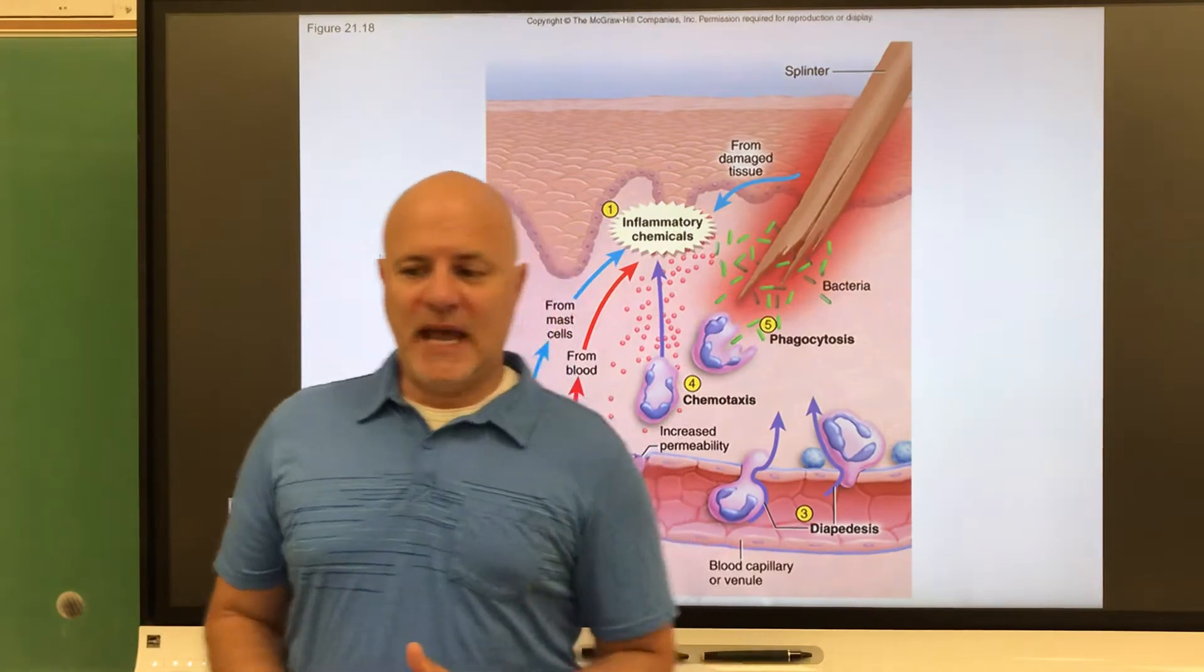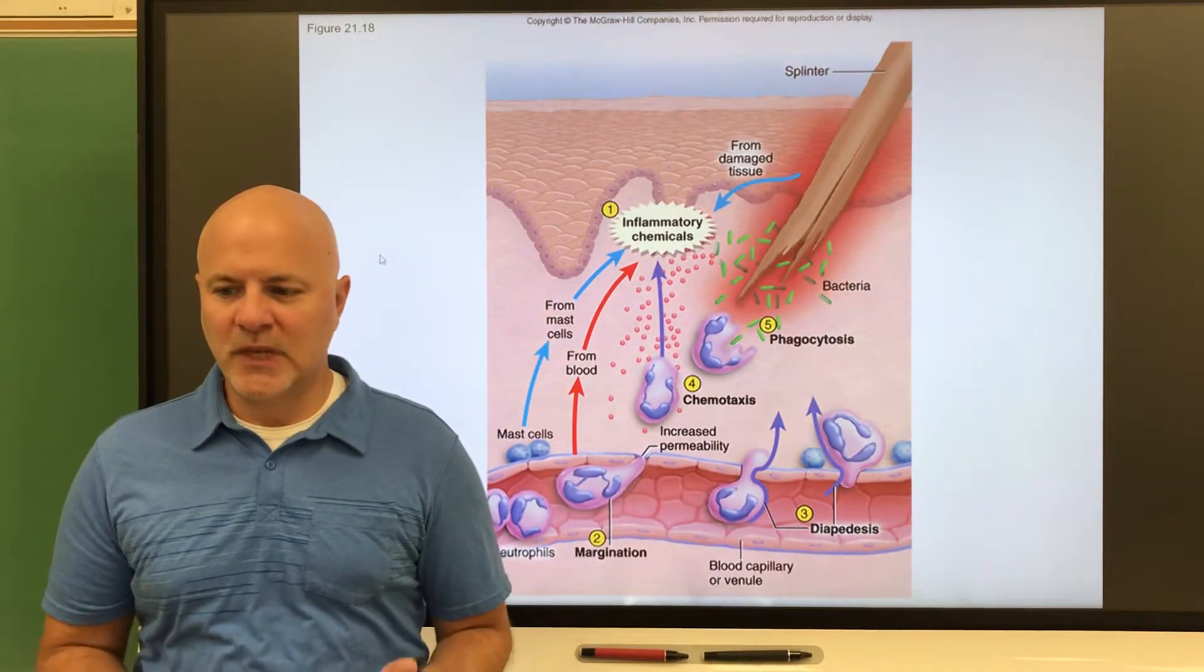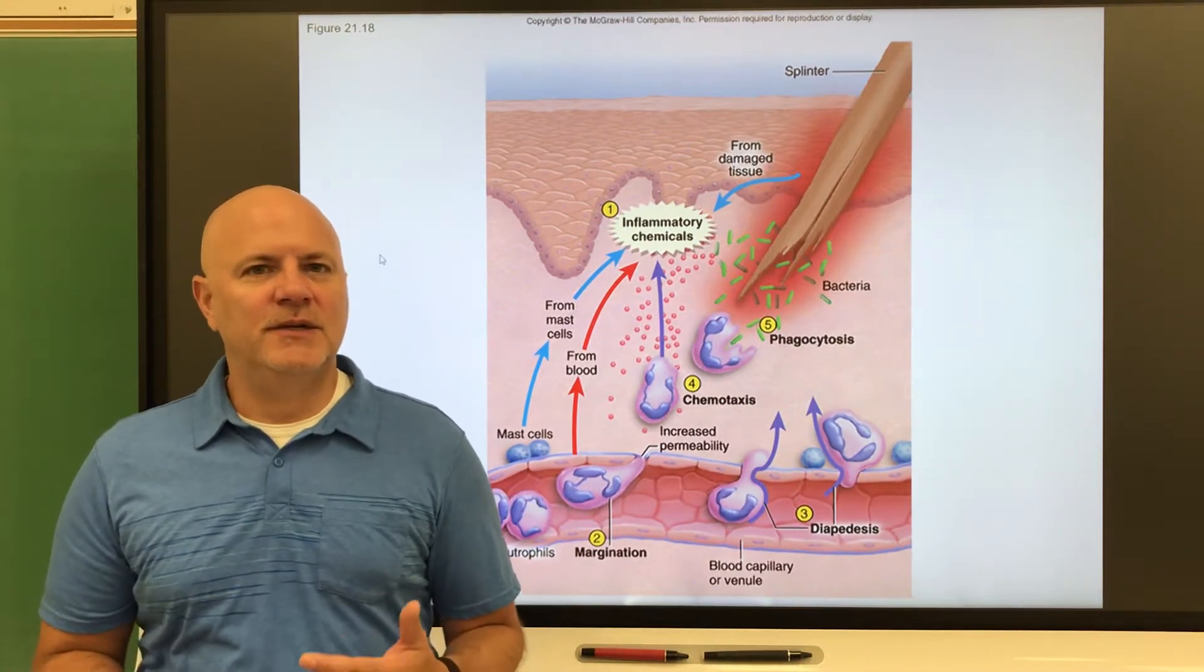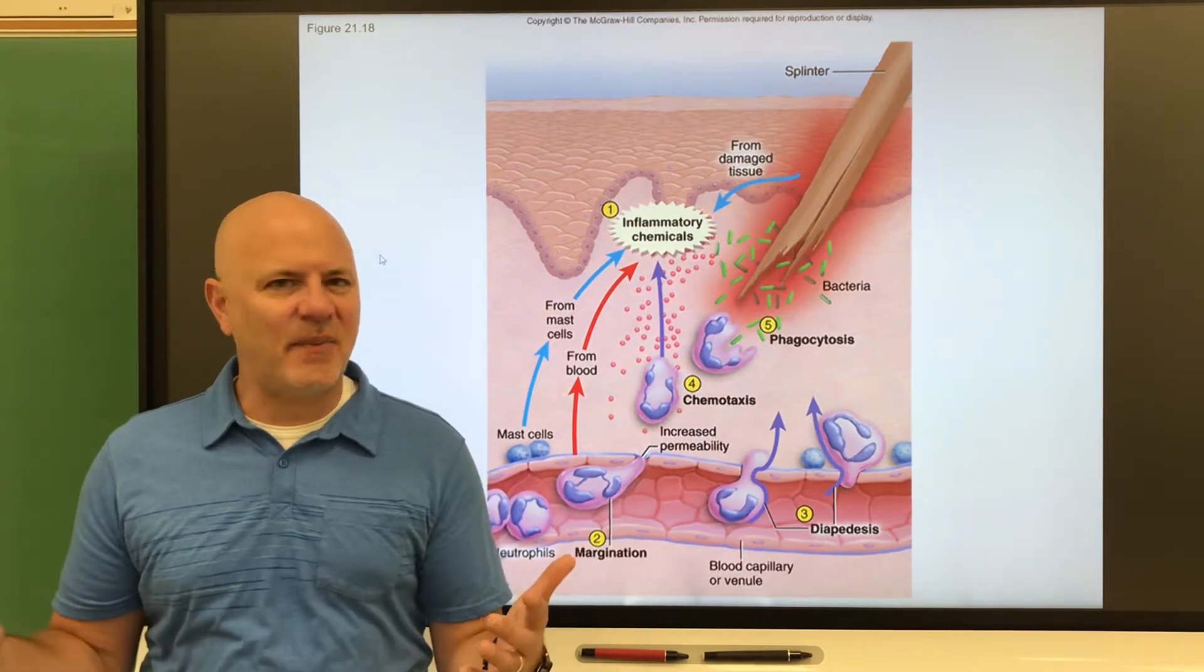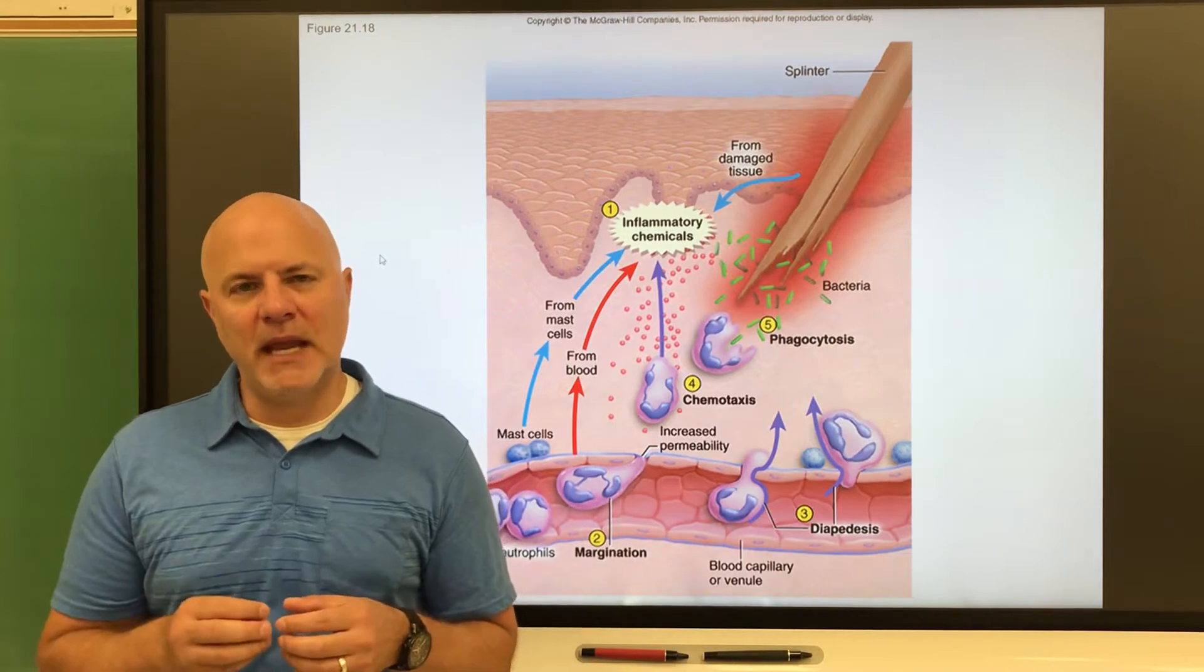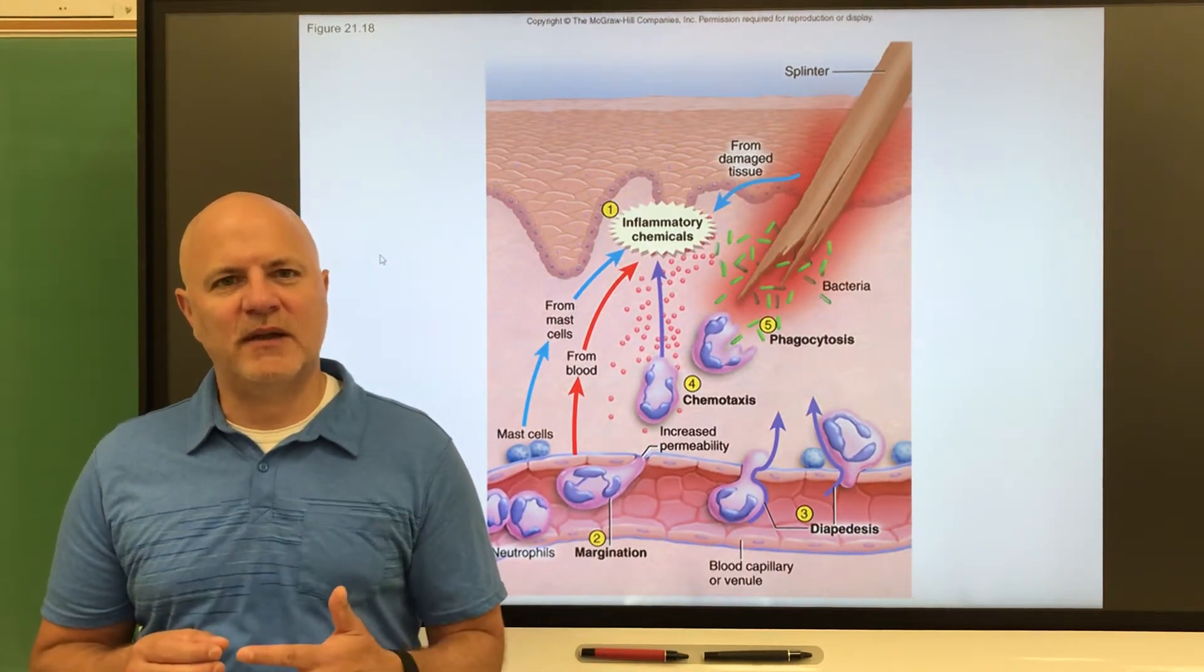Let's take a look at specific or adaptive defenses, also known as immunity. This is a resistance to a particular pathogen or its byproducts. Where those other things were any type of pathogen got in us, we would do those responses. We are going to make specific lymphocytes here for a particular pathogen.